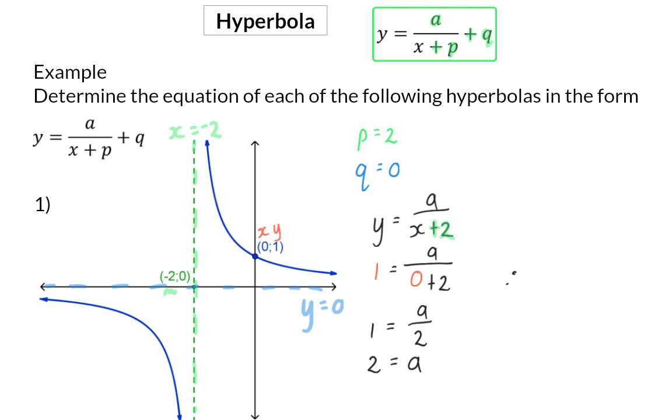So, the final equation will be y is equal to 2 over x plus 2, and the q value is 0.